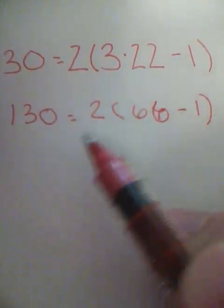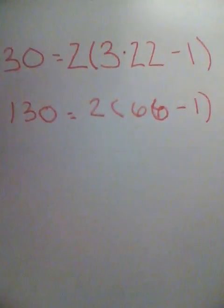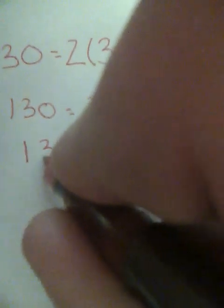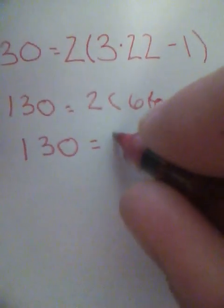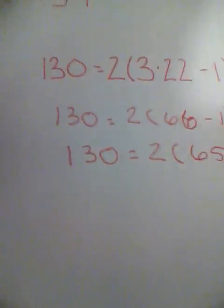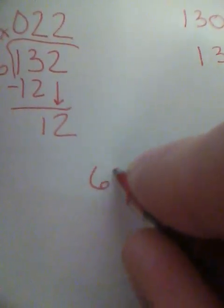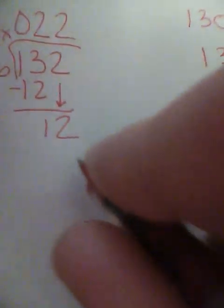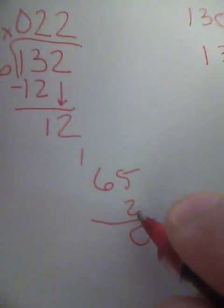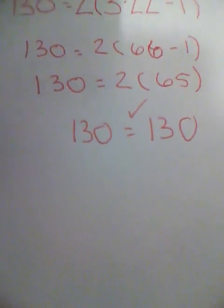Now I have in parentheses 66 minus 1. I could use distributive property but because these are like terms I'm going to combine them first. So the 130 stays the same, 2 times, 66 minus 1 is 65. So I have 130 equals 2 times 65. I can't do that in my head so I go down here in my little workspace. 65 times 2, that gives me 10. 6 times 2 is 12, 12 plus 1, that gives me 13. Oh yes, 130. Check. 130, so I am correct.